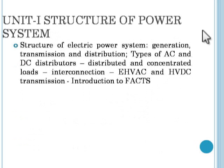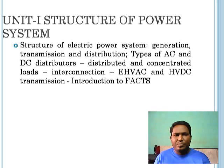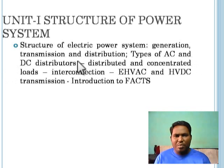Unit one topic is the structure of power systems. In the structure of power systems, we are able to learn the basic structure of the electric power system — the one-line diagram — with generation, transmission, and distribution details. We will compare the advantages of using alternating current versus direct current, and how DC is superimposed with AC for particular applications. We will also cover types of AC and DC distributors, analyzing distributors with distributed, concentrated, and interconnected loads.